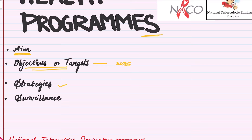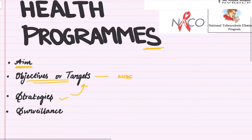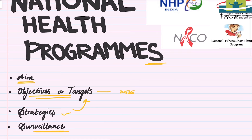Strategies are the processes by which we can achieve these targets. Then we have surveillance. Surveillance tells us how well a program is working — whether it is actually satisfactory and actually helping us treat and eliminate the disease.